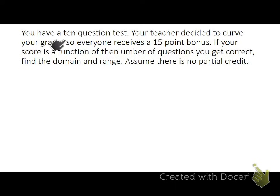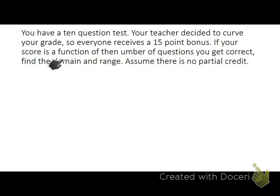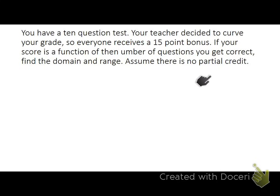In this first question, you have a 10-question test. Your teacher decided to curve your grade so everyone receives a 15-point bonus. If your score is a function of the number of questions you get correct, find the domain and range. We're going to assume there's no partial credit.